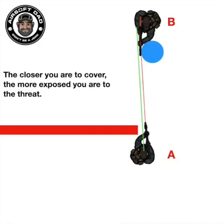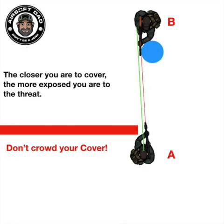Think back on the last seesaw image. Although neither player is on a seesaw, the same philosophy regarding distance from the pivot point holds true. In this illustration, player A is closer to the pivot point, giving player B the advantage. Because player A is so close to the pivot point, player A must expose more of their body to engage player B, hence the advantage to player B. For player A to recover some cover, the player only needs to step back from the pivot point. Remember, don't crowd cover.